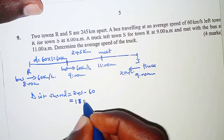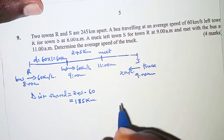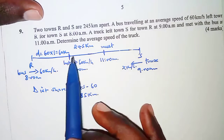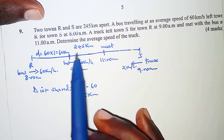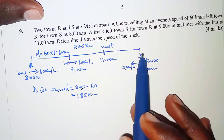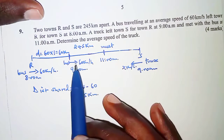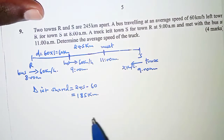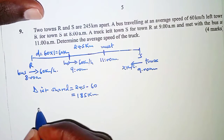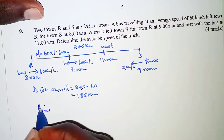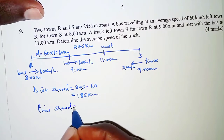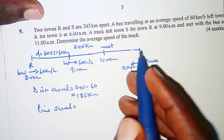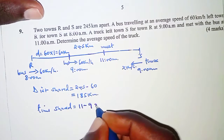The next thing is to determine the time taken by both of them to meet. From 9 a.m. — both the bus continuing from its position and the truck from town S — they took the same time to meet. That shared time is the period between 9 a.m. and 11 a.m., so 11 minus 9 equals 2 hours.